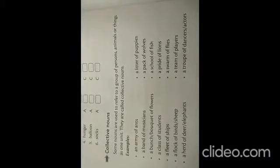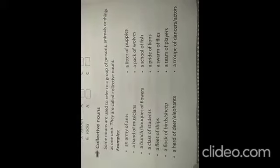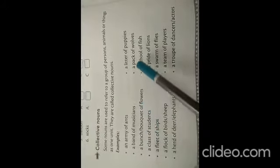Now let us come to collective nouns. The word 'collective' itself tells us it means a group. Some nouns are used to refer to a group of persons, animals, or things as one unit. These are called collective nouns. For example, an army of ants — many ants are moving, so you say 'an army of ants,' not 'many ants.' A bunch of flies, a pack of wolves, a school of fish.